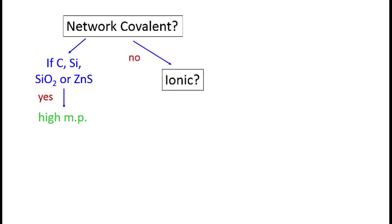If the material is not a network covalent solid, we next ask if the material is ionic. We should be able to identify ionic materials as combinations of metals and nonmetals. If it is, then we know it will have a high melting point.